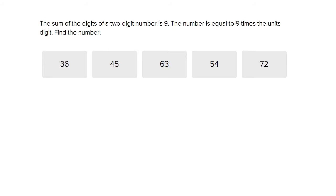The number itself is equal to nine times the units digit. For example, 81 would work, right? Because eight plus one is nine. But 81 is not nine times the units digit, so 81 would not work.